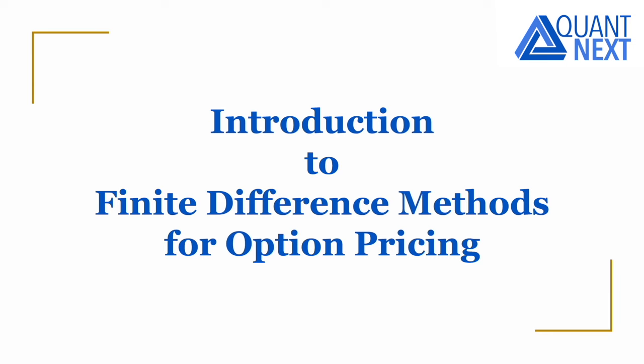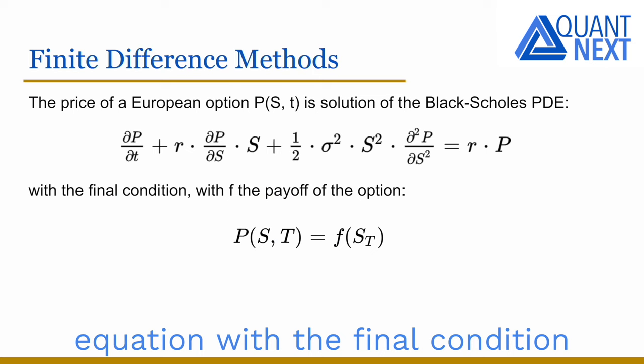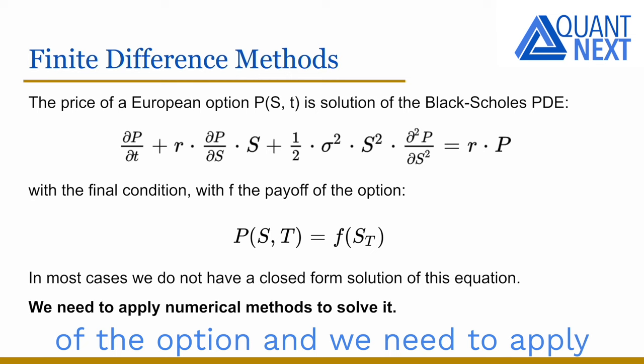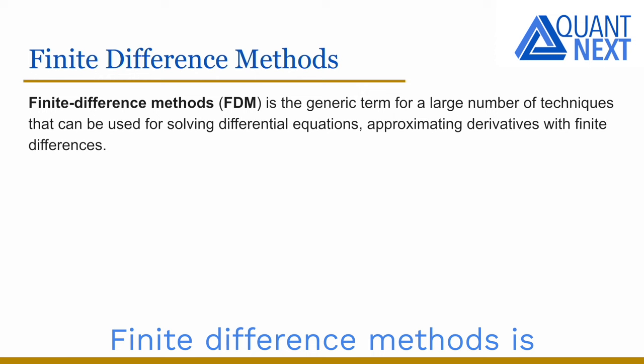The price of a European option is a solution of the Black-Scholes equation with the final condition at maturity t, which is the final payoff of the option. In most cases we do not have a closed-form solution for the price of the option and we need to apply numerical methods to solve it.